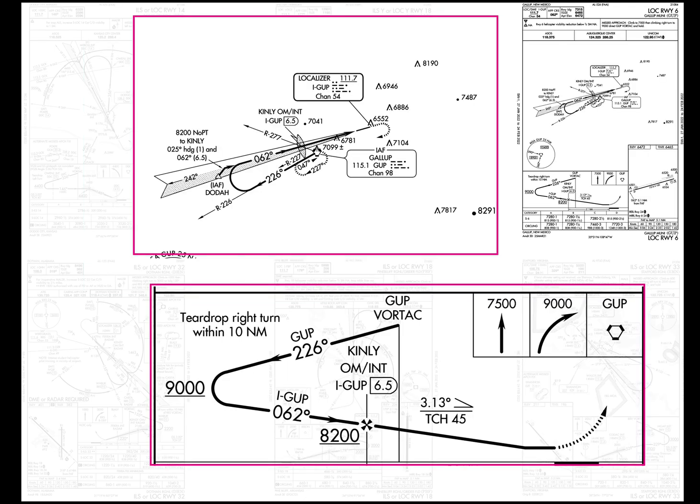At Gallup, there is no distance outbound. All we get in the profile view is that you need to remain within 10 nautical miles. As a pilot, you use your judgment as to when you're going to turn. If you turn too early, you might mess up your intercept of the Kinley outer marker; if you turn too late, you might violate the 10 nautical miles.